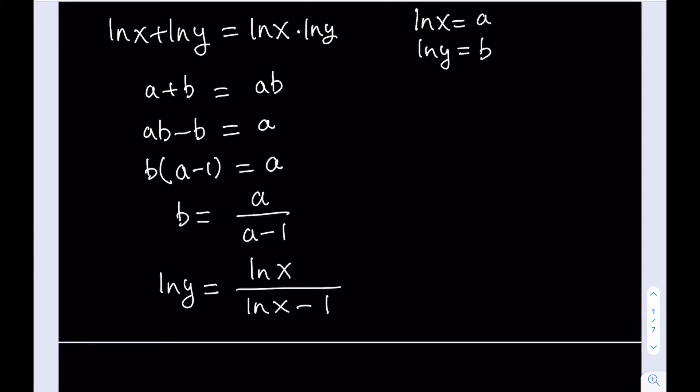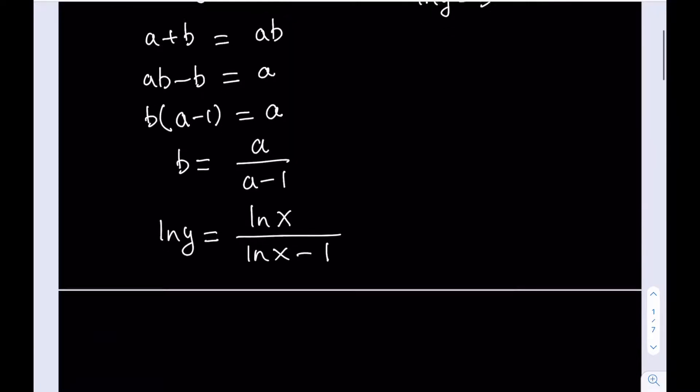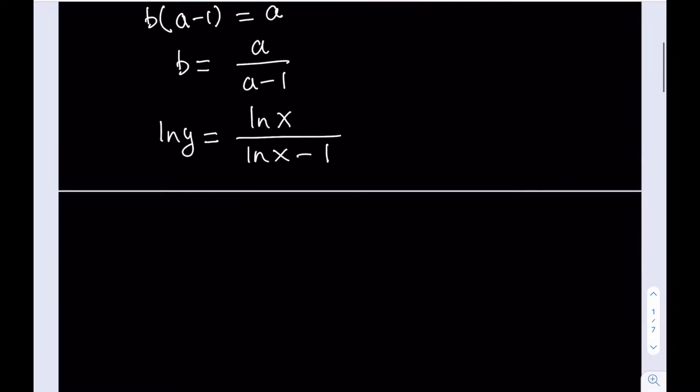And of course there's a way to write ln(x) minus 1 in terms of a single ln, but we're not going to do that right now. So since our goal is to solve for y here, how can I isolate this? Since ln is base e.